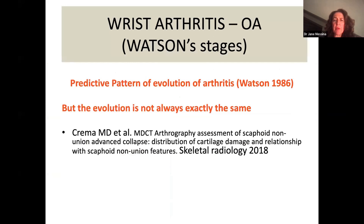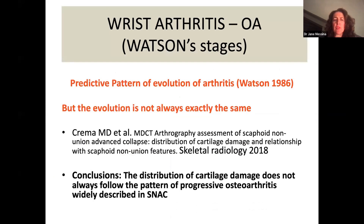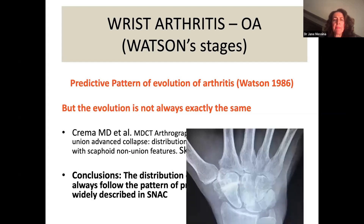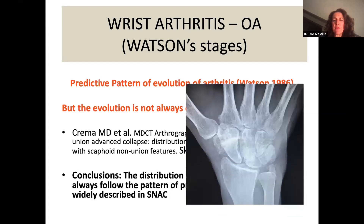This pattern described by Watson has been recently challenged. A paper published in 2018, using arthrography to assess scaphoid nonunion advanced collapse, concluded that the distribution of cartilage damage does not always follow the pattern of progressive osteoarthritis widely described in SNAC wrist — it can be different from patient to patient.